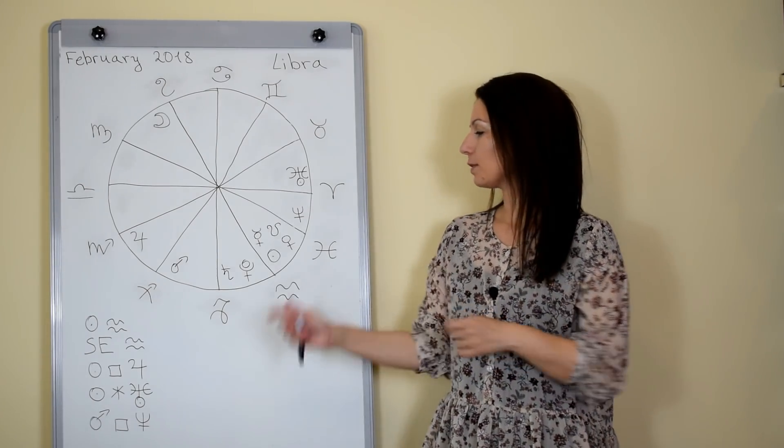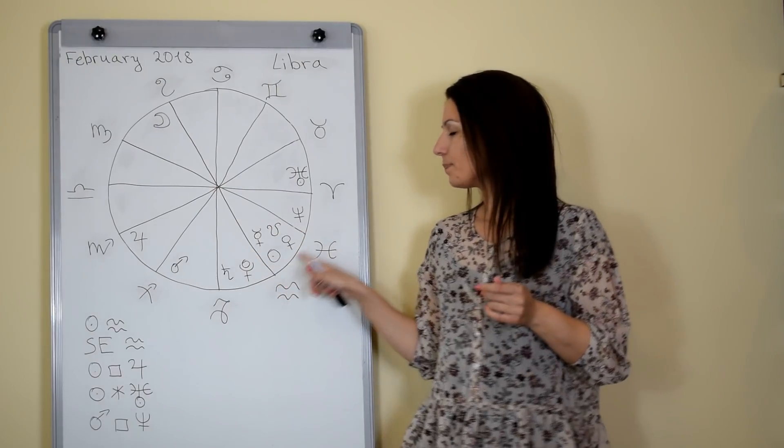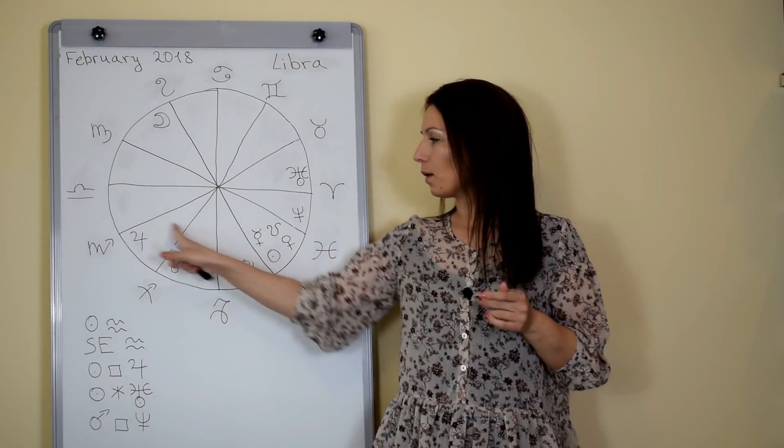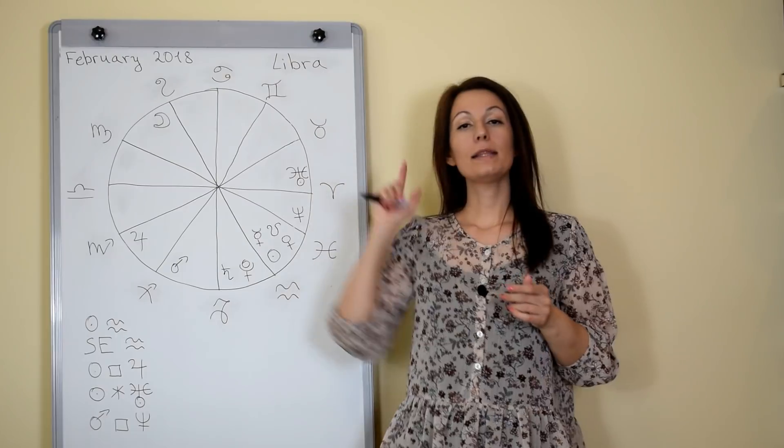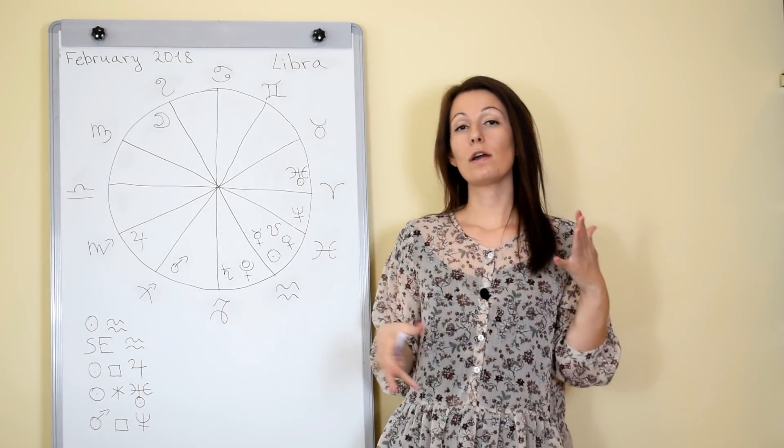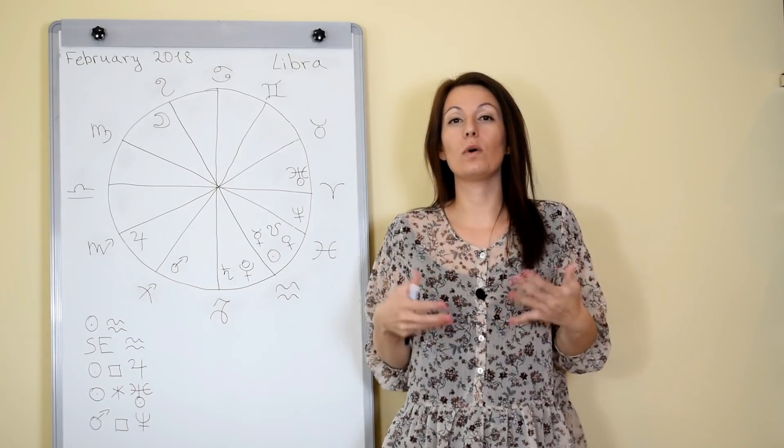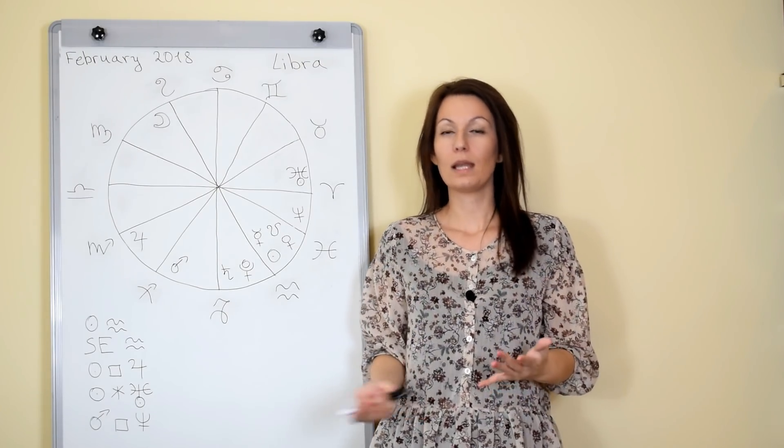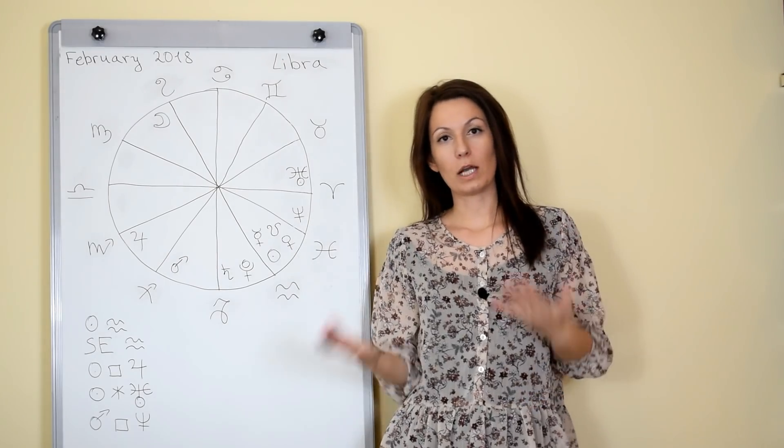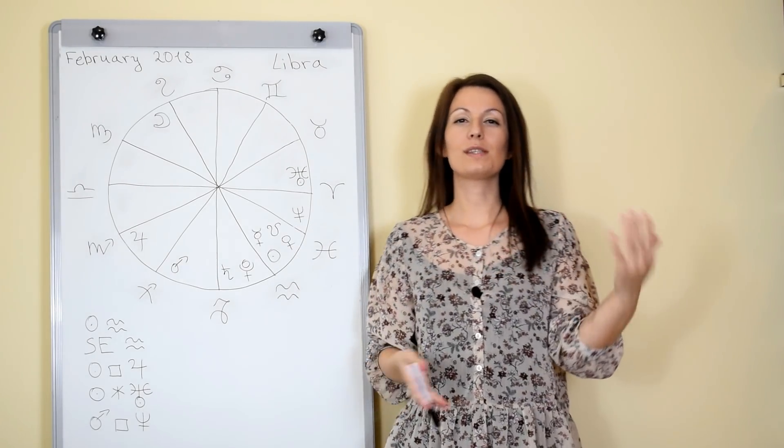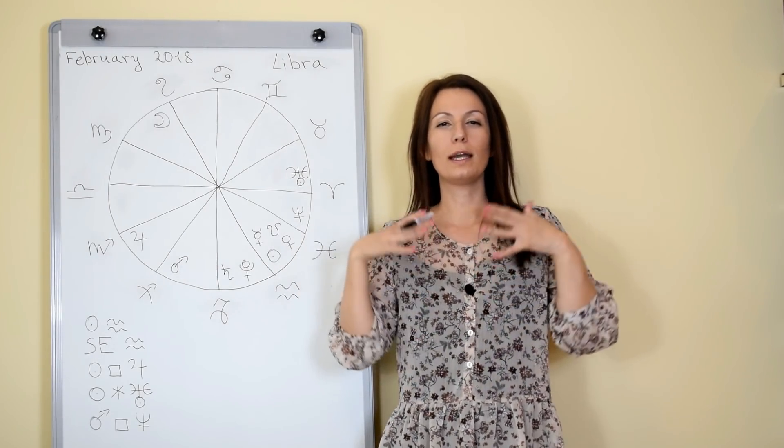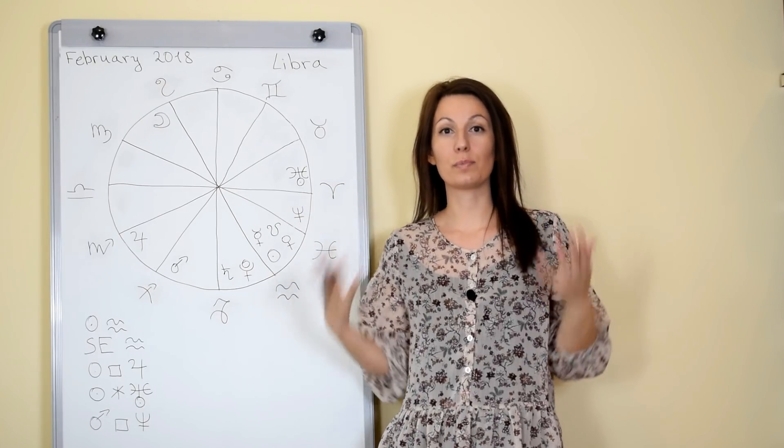It's important to mention that when the sun is in Aquarius it will make square with Jupiter and this is a challenging aspect. The squares are aspects which require from us to make some kind of change because we feel uncomfortable for some reason.